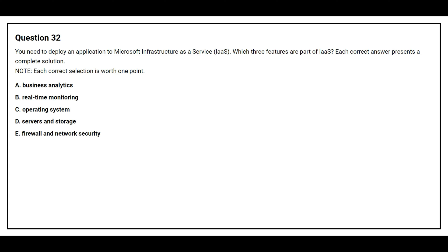Which three features are part of Infrastructure as a Service? Option A: business analytics. Option B: real-time monitoring. Option C: operating system. Option D: servers and storage. Option E: firewall and network security. The correct answers are Option C (operating system), Option D (servers and storage), and Option E (firewall and network security).